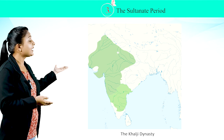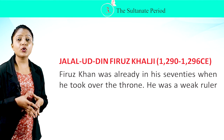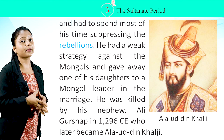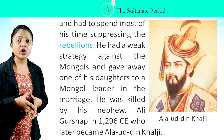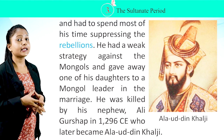Jalaluddin Firuz Khalji, 1290–1296 CE. Firuz Khan was already in his 70s when he took the throne. He was a weak ruler who spent most of his time suppressing rebellions. He had a weak strategy against the Mongols and gave one of his daughters in marriage to a Mongol leader. He was killed by his nephew Ali Gurshap in 1296 CE, who later became Alauddin Khalji.